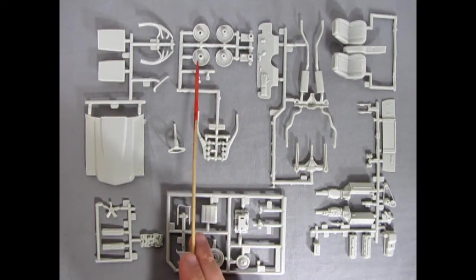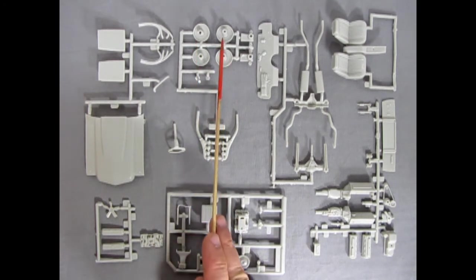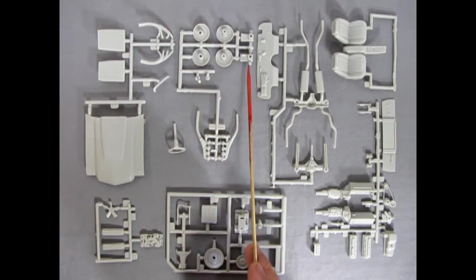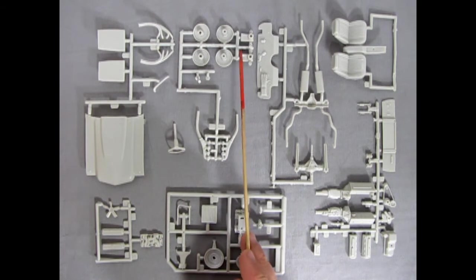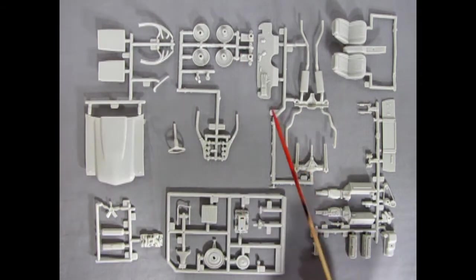Then here we have our front wheel backs. And our rear wheel backs. These pins of course are going through these king pins here. Which there's a lot of little flash bits on there. Which we'll have to clean up.